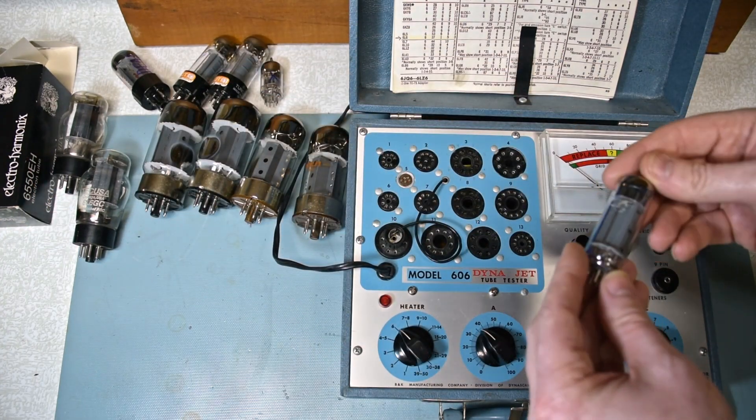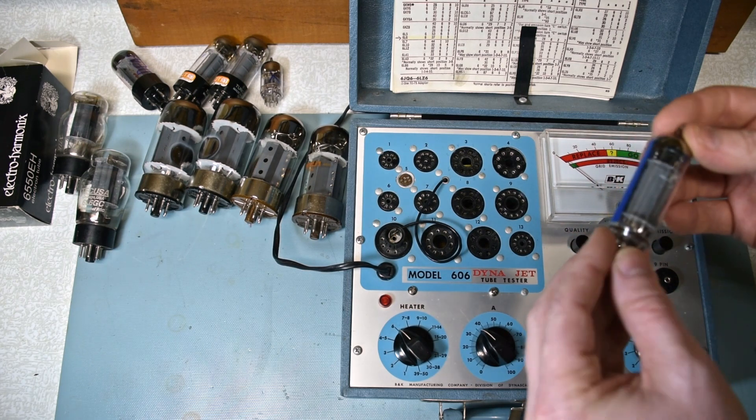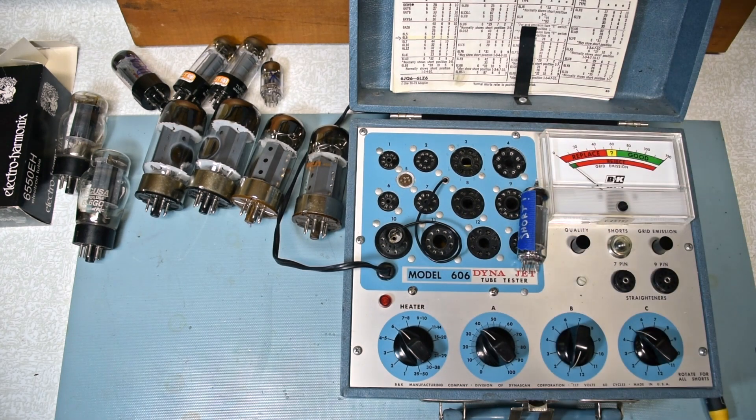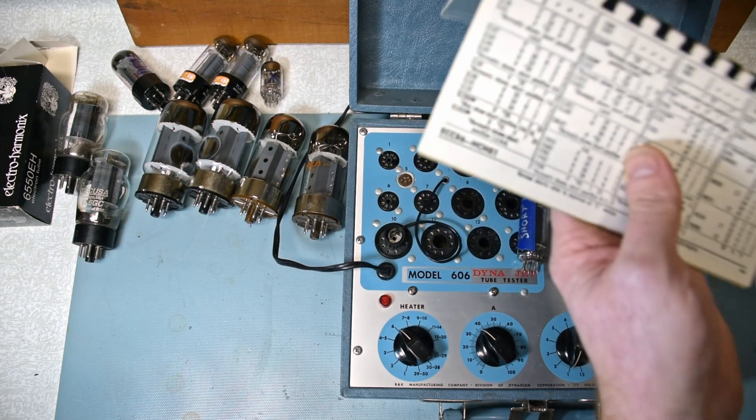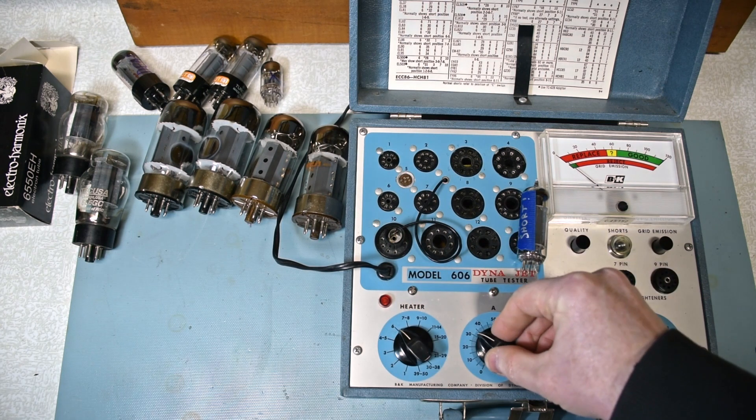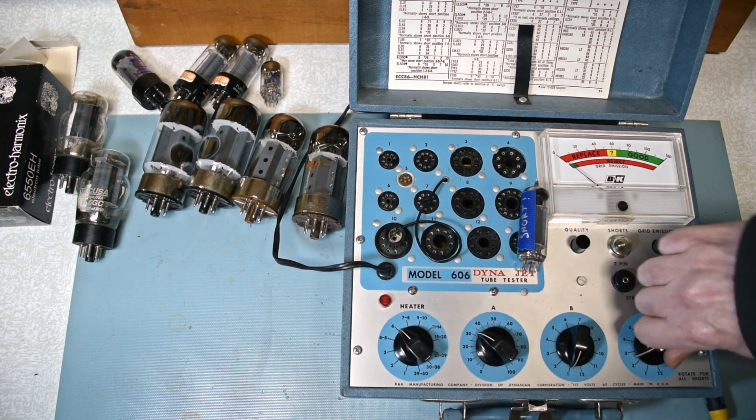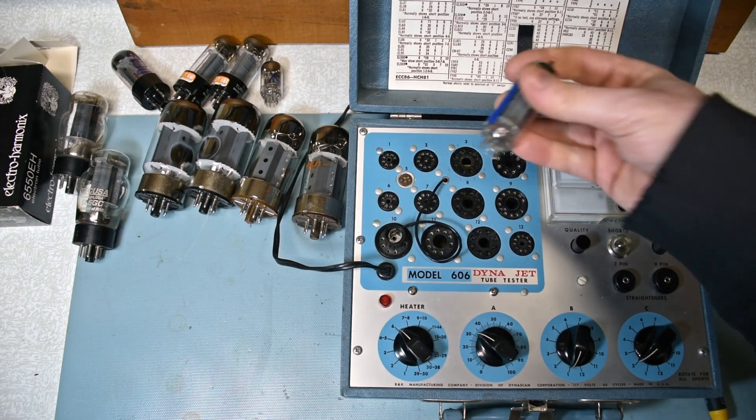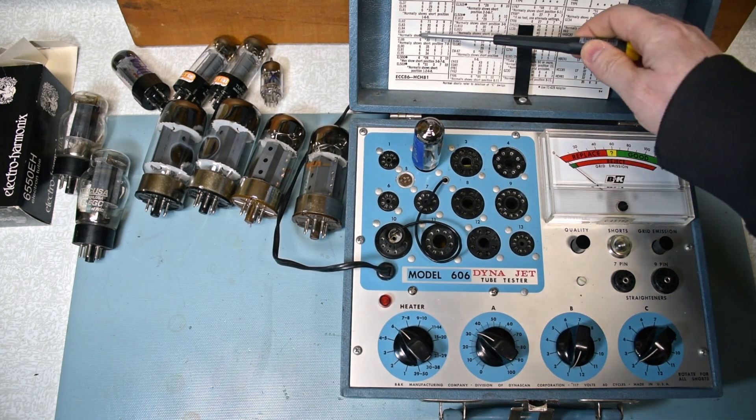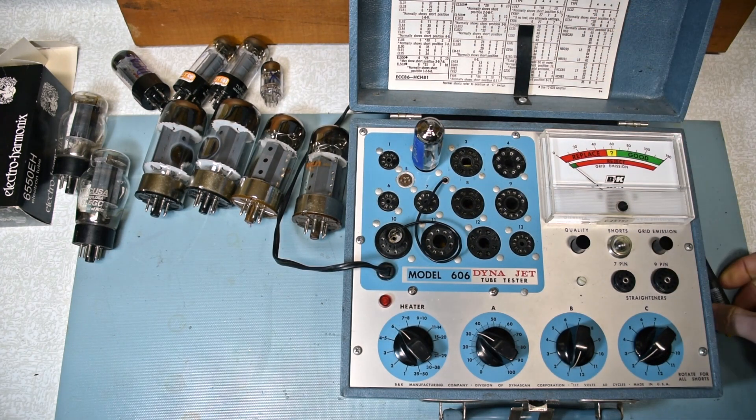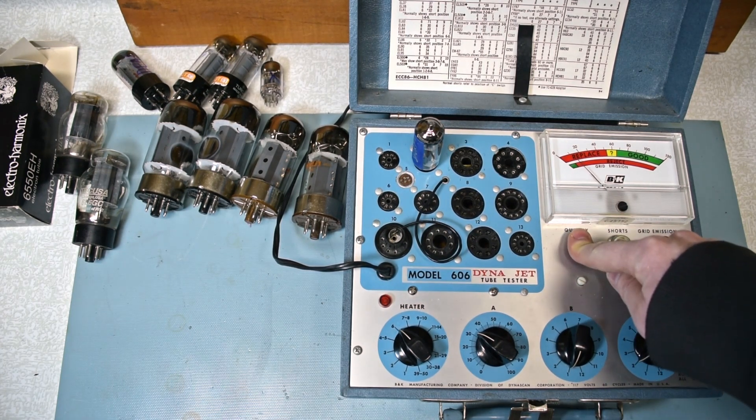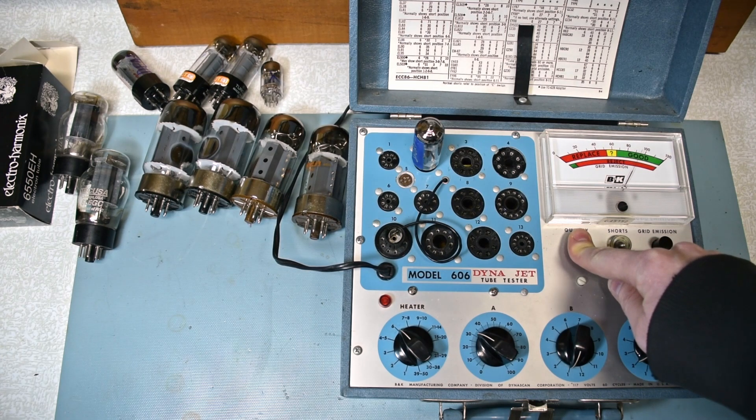Now I've got a known defective tube here. I believe this is an EL84. Yeah, EL84. I wrote on here just to keep track. 633122, socket 2. No special notes on that one.